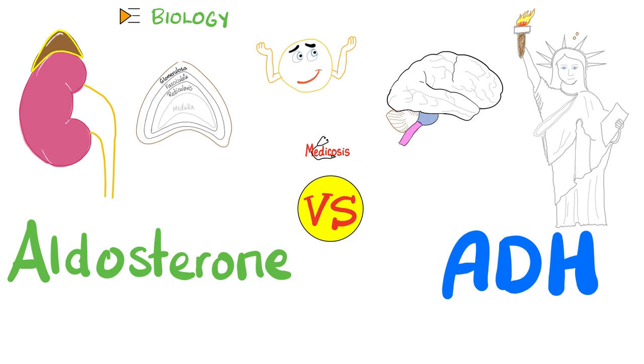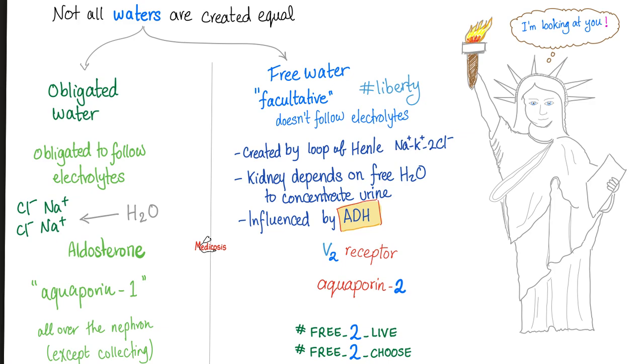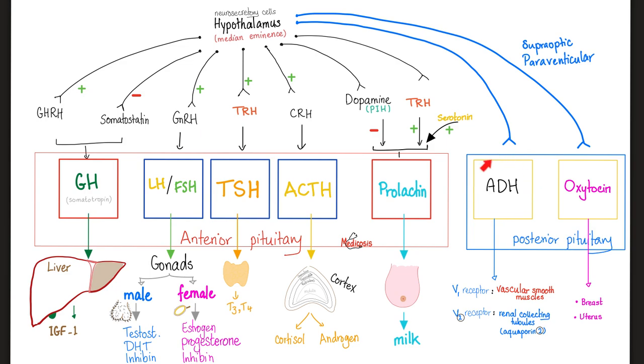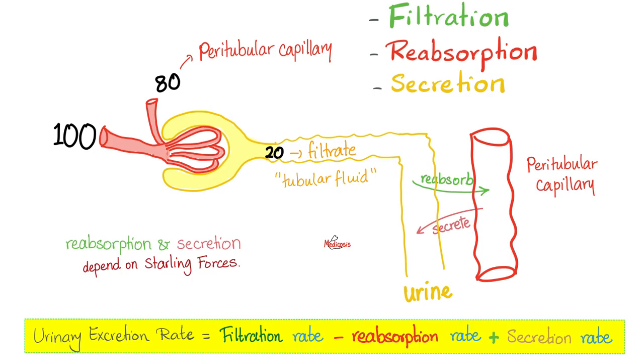The difference between aldosterone and ADH was discussed before. In a nutshell, aldosterone wants to reabsorb salt and water. This is obligated water. Conversely, anti-diuretic hormone wants to reabsorb free water, water without any electrolytes. Where does aldosterone come from? From the adrenal cortex. Where does anti-diuretic hormone come from? It was made by the hypothalamus, secreted by the posterior pituitary.